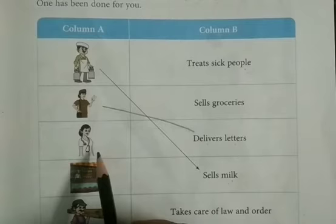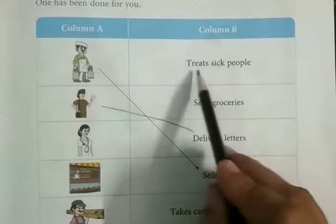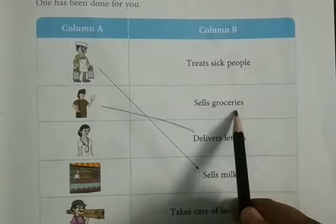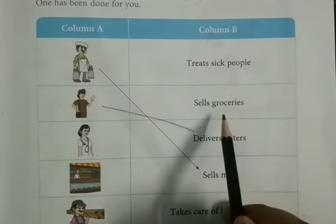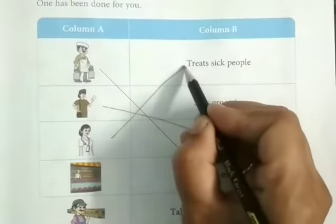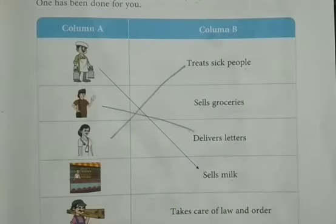Second picture clue, doctor. Now there are two options: treats sick people, sells groceries. Which will be the correct one? Yes. Doctor treats sick people. This is the correct one.